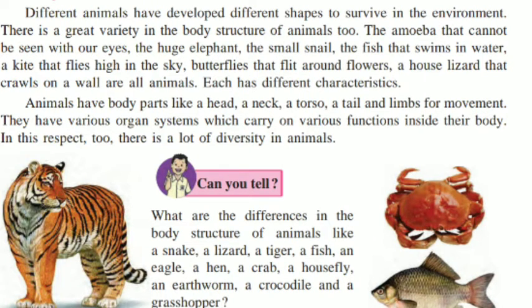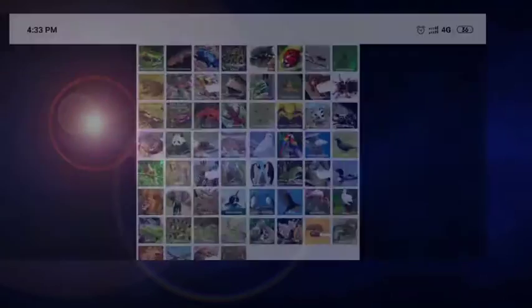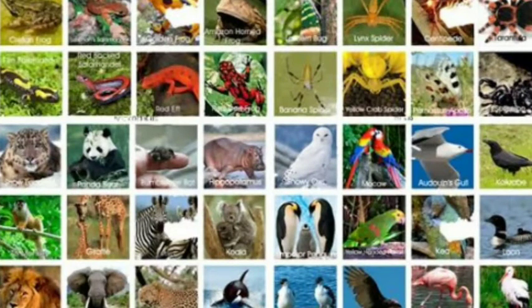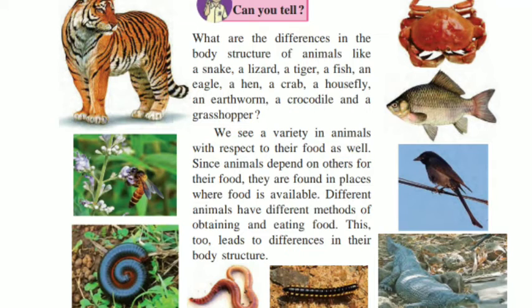Students, different animals have developed different shapes to survive in the environment. There is a great variety in the body structure of animals. The amoeba that cannot be seen with our eyes, the huge elephant, the small snail, the fish that swims in water, a kite that flies high in the sky, butterflies that flit around flowers, and a house lizard that crawls on a wall are all animals. Each has different characteristics.